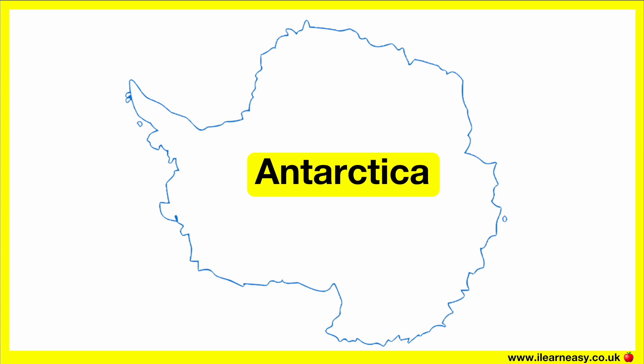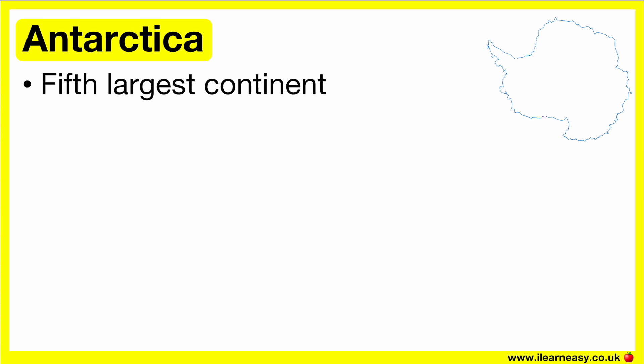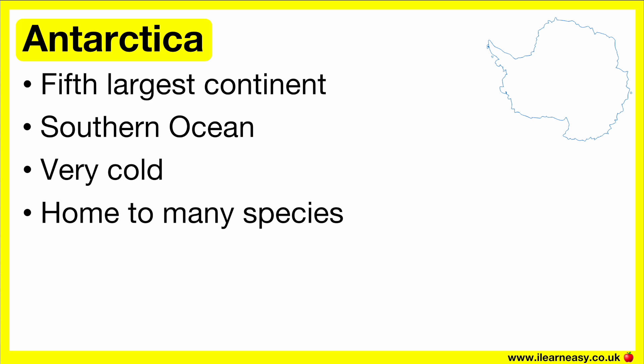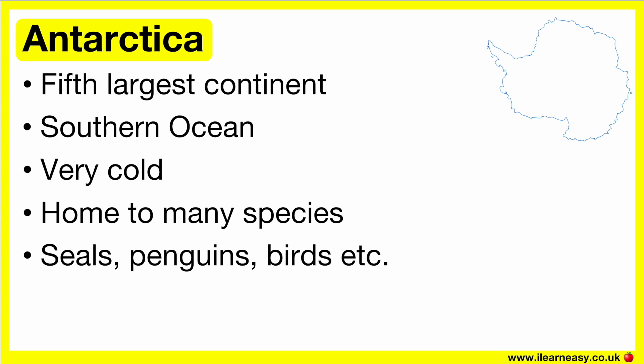Antarctica is the fifth largest continent. This continent is surrounded by the Southern Ocean. The temperature in Antarctica is very cold, and most of it is covered in ice. Antarctica is home to many species, such as seals, penguins, birds, and many animals.